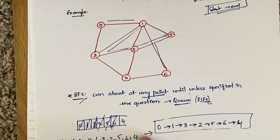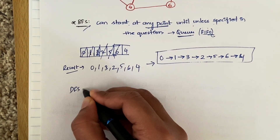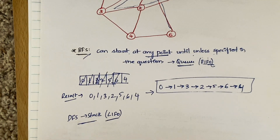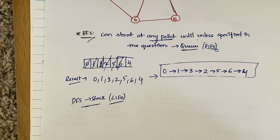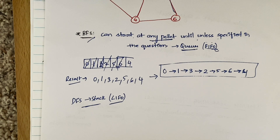Now let's see how to do the traversal using DFS. DFS is implemented using a stack. A stack follows the principle of Last In First Out (LIFO) — whatever goes in last comes out first. Think of a can of Pringles: the chip placed in last sits on top, and that's the one you take out first when you open the can. That's how a stack works.